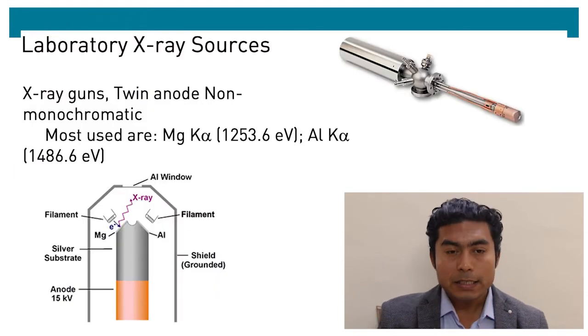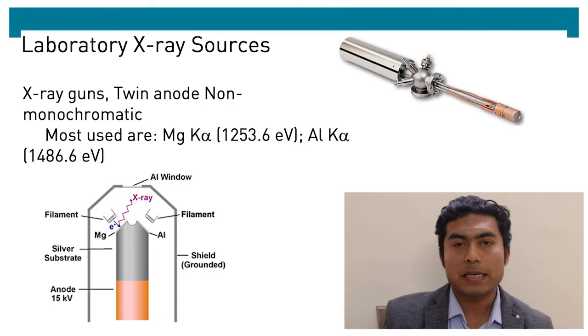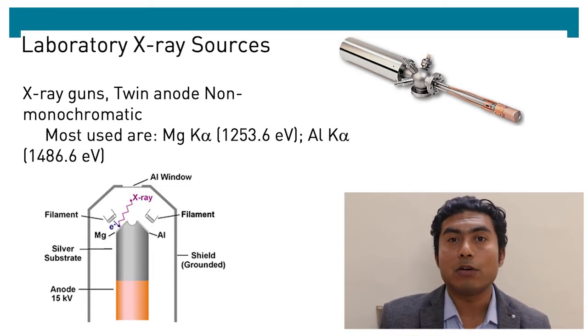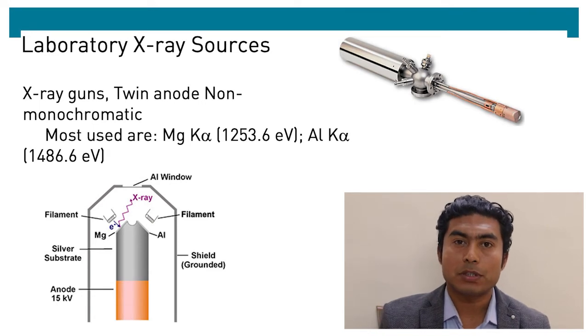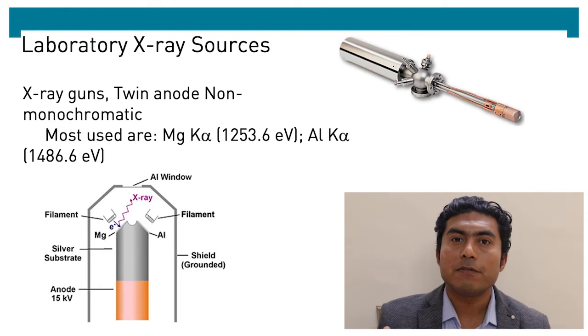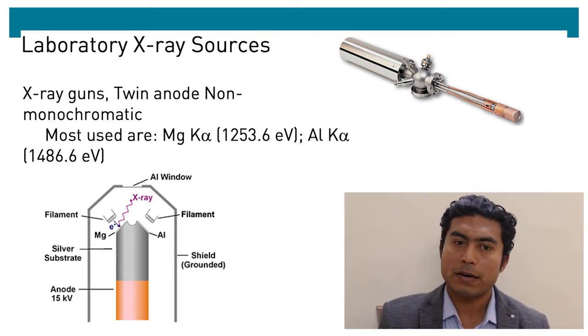For X-ray source, we generally use characteristic X-rays from different metallic anodes, mostly magnesium and aluminum. These two anodes are used. They have an energy range within 1500 eV and this range is called the soft X-ray range.